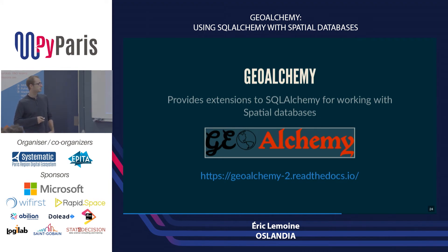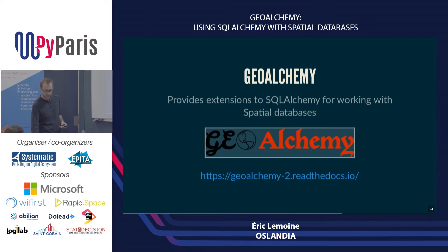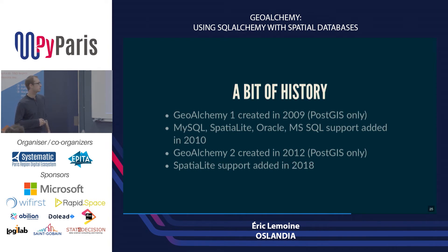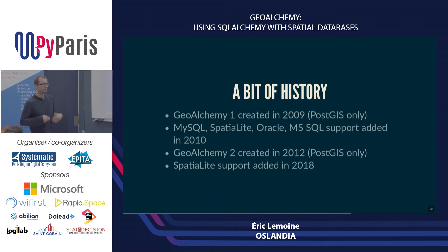Now I'm going to talk about GeoAlchemy, which provides an extension to SQLAlchemy for working with spatial databases. You have spatial databases and SQLAlchemy, and GeoAlchemy is just a layer on top to be able to use spatial databases. A bit of history — it's actually quite an old project, created in 2009, and it was PostGIS-only at that time. We then added more dialects — MySQL Spatial, SpatiaLite, etc. In 2012, we decided to rewrite it completely because SQLAlchemy had become much more flexible. GeoAlchemy 2 is a much thinner layer on top of SQLAlchemy, and recently we added support for SpatiaLite.